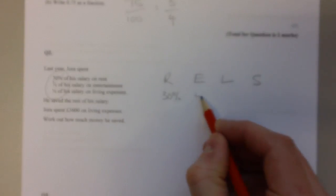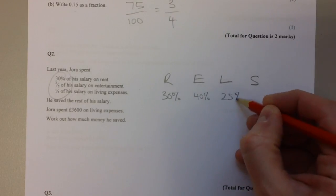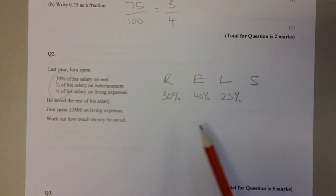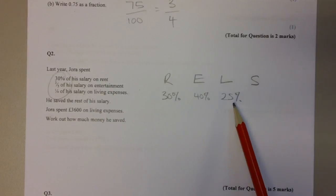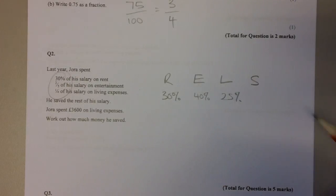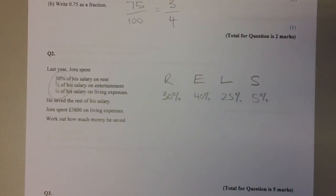I'm going to turn the two-fifths into 40% and the one-quarter is 25%. Now that helps because if you add up the 30% and the 40%, that's 70% plus 25%, that's 95%. That means that 5% of his salary must have been saved.